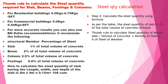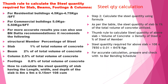The thumb rule steel quantity for the above slab is equal to volume of concrete × density of steel × percentage of steel for the member. That means steel quantity required = 10.8 × 7850 × 0.01 = 847.8 kg. For accurate calculation, prepare and check with the bar bending schedule.